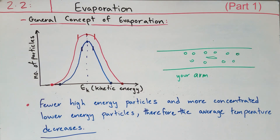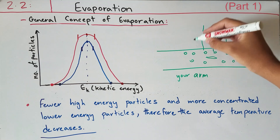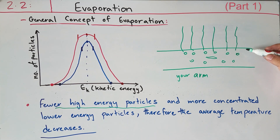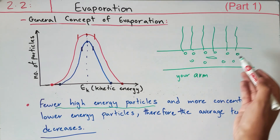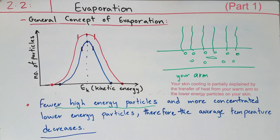The final thing I'm going to talk about is the cooling effect and its application in taking hot showers. When you take a hot shower, the water droplets on your skin will eventually evaporate as they gain kinetic energy from the heat source. As these high-energy particles in the droplets evaporate, there will be fewer higher-energy particles on your skin and therefore more concentrated lower-energy particles — which may even be the atoms and molecules in your skin — and therefore the average temperature of your skin will decrease. This explains why after taking a hot shower, as the water droplets on your skin evaporate, you suddenly feel cold and maybe even shiver.